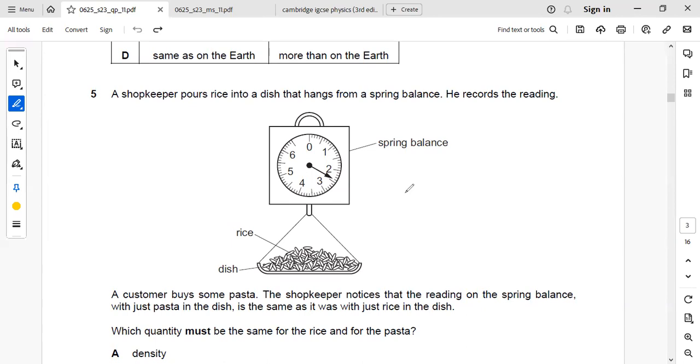Hi everyone. Our next question is a shopkeeper pours rice into a dish that hangs from a spring balance. He records the readings and a customer buys some pasta. The shopkeeper notices that the reading on the spring balance with just pasta in the dish is the same as it was with just rice in the dish.